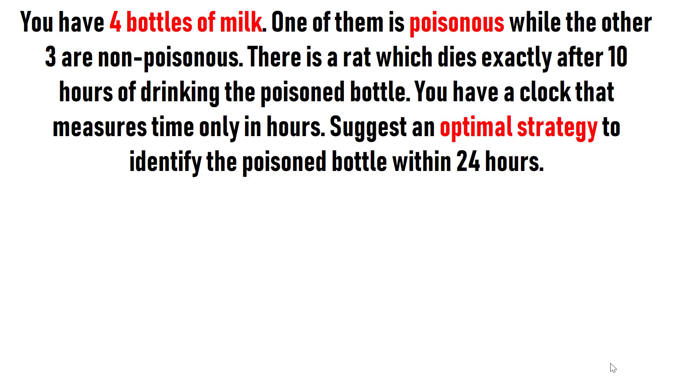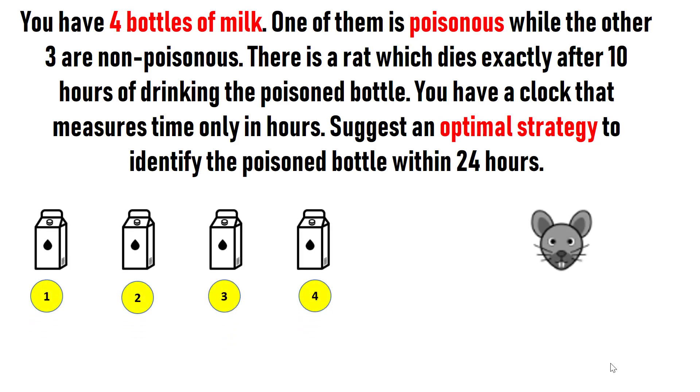You have four bottles of milk. One of them is poisonous while the other three are non-poisonous. There is a rat which dies exactly after 10 hours of drinking the poisoned bottle. You have a clock that measures time only in hours. Suggest an optimal strategy to identify the poisoned bottle within 24 hours.